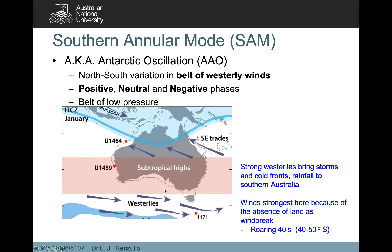The blocking of westerlies typically means warmer conditions. And remember, there's a scenario where there's a persistent low pressure off the coast, and if there's a low pressure trough across the eastern part of the continent, that high pressure can draw hot, dry air from the continent down into southeast Australia, leading to heatwave conditions. So the subtropical high blocks these westerly flows, and we recall the westerlies are strong because of the absence of windbreaks — the roaring forties.